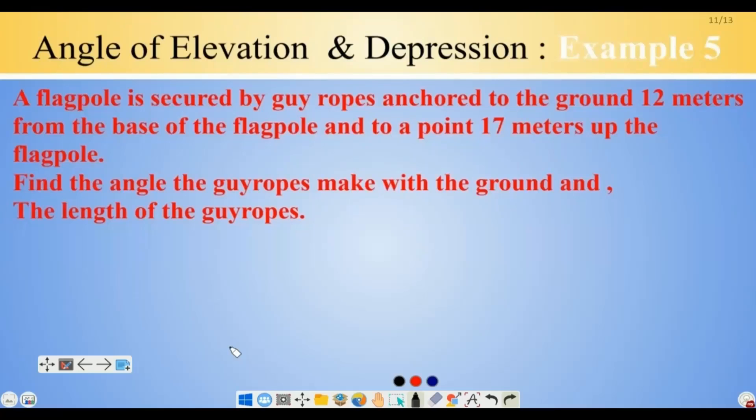Last example. A flagpole is secured by guy ropes anchored to the ground 12 meters from the base of the flagpole and to a point 17 meters up the flagpole. Find the angle the guy ropes make with the ground and the length of the guy ropes.